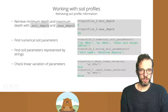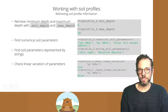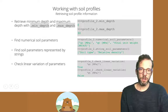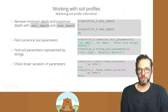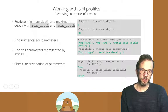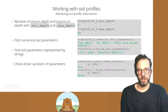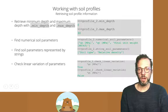Once the soil profile is encoded, we can retrieve information from it: minimum and maximum depth using the min_depth and max_depth attributes. We can find which numerical and string soil parameters are present. For a numerical parameter, we can check whether it varies linearly with the check_linear_variation method by passing in the parameter name. For example, Qc is varying linearly, while Qt from the previously shown profile is not.